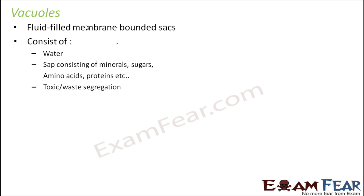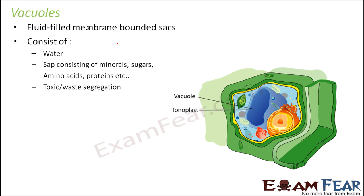Here you can clearly see this blue-colored big vacuole in the picture. The membrane which surrounds the vacuole is known as the tonoplast - a specific name is given to the membrane which surrounds the vacuole.